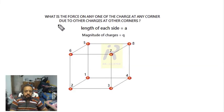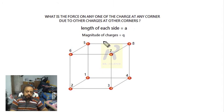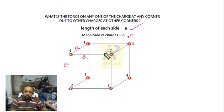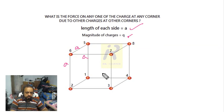The question we are solving is: what is the force on any one charge at a corner due to all other charges at the other corners? We have a cube with charges of magnitude q at every corner, and the length of each side is a. We need to find the net force on any one charge due to all other charges.